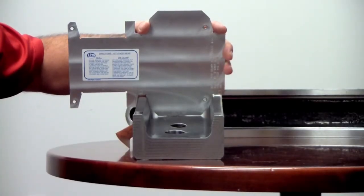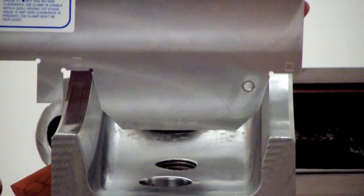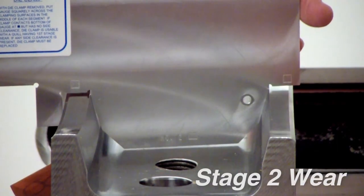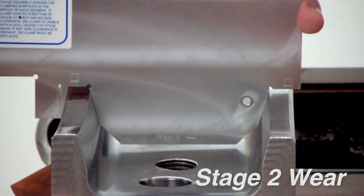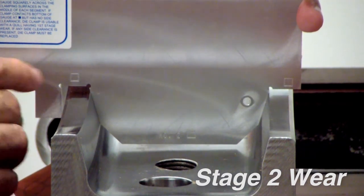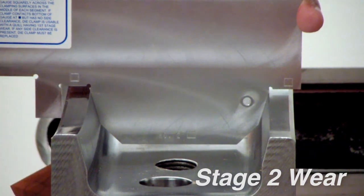Now to turn it over and explain stage two. If this clamp was at stage two with no side-to-side movement, it could be used only on a quill flange having stage one wear. If the flange and the clamp had stage two wear, they could not be used together.